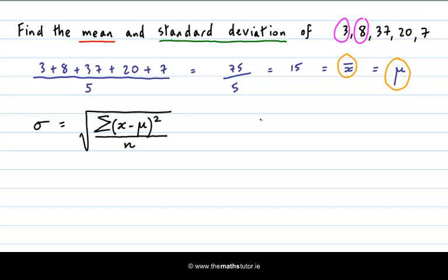For example, the first number is 3 minus 15. We then square it and then we have to add the next one, which is 8 minus 15.